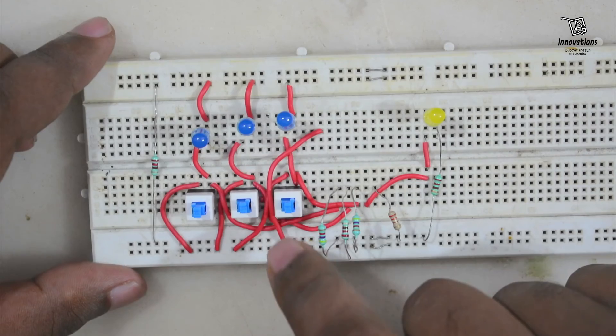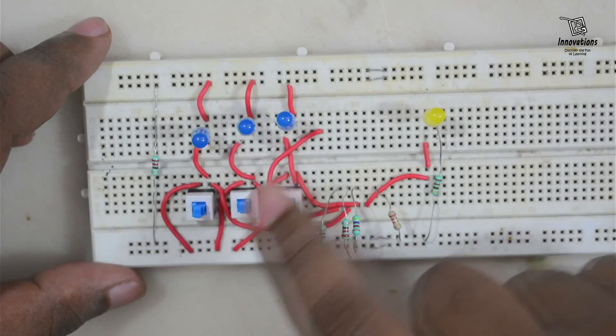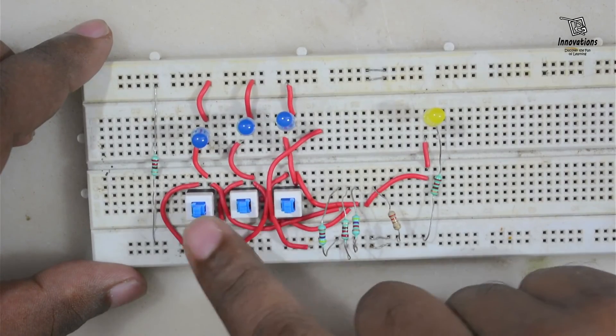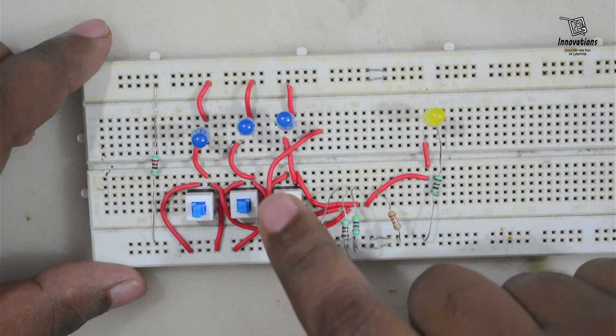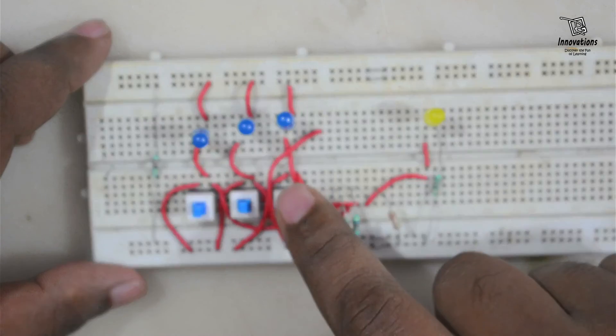That means the input will be 0, and these three LEDs are connected with these three switches. So whenever the input is high these LEDs will glow, and whenever the input is low these LEDs will not glow.